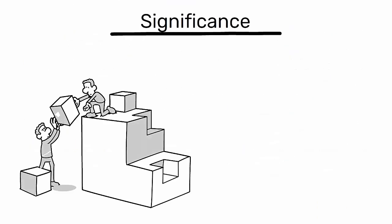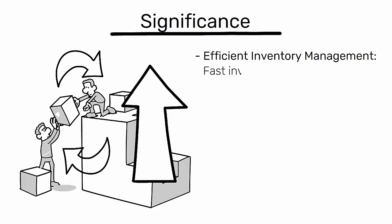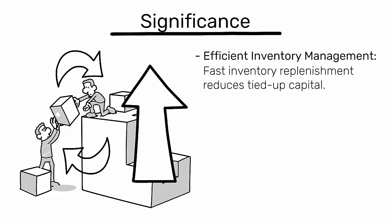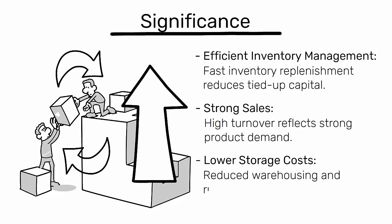A high inventory turnover ratio indicates efficient inventory management. Fast inventory replenishment reduces tied-up capital. High turnover also reflects strong product demand, and leads to lower storage costs — including reduced warehousing expenses and lower risk of obsolescence.